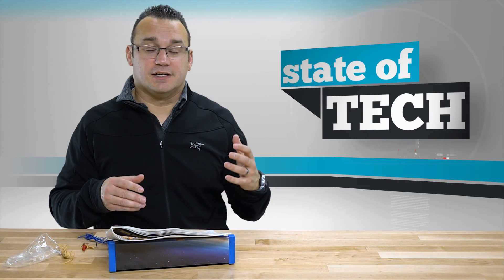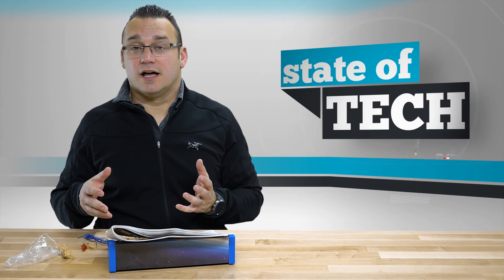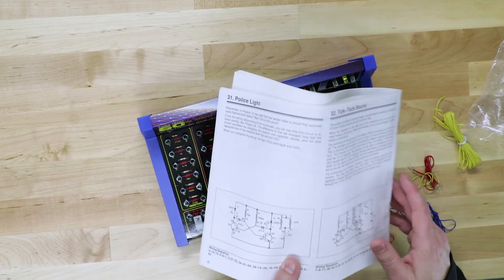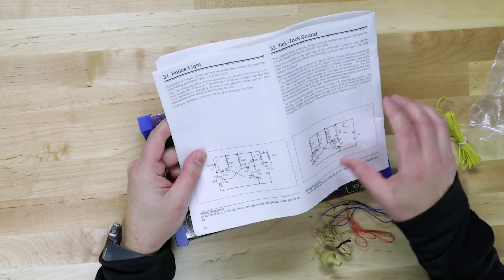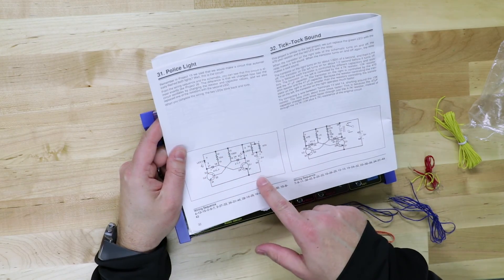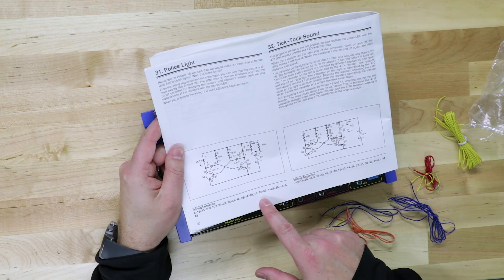So obviously when a light is flashing, police flashing lights go at a certain oscillation rate. And so you can actually control that here. So it gives you the schematic. And what we basically have to do is create this and it gives you the wiring sequence down here.